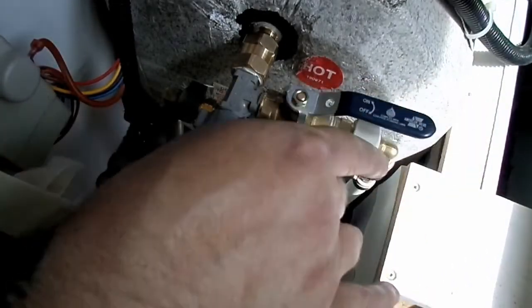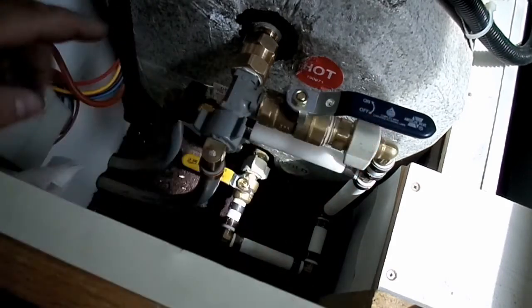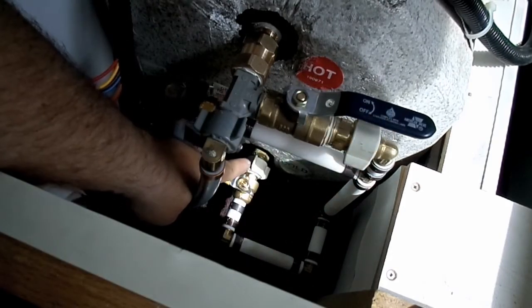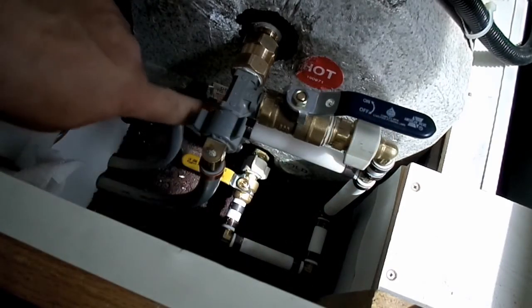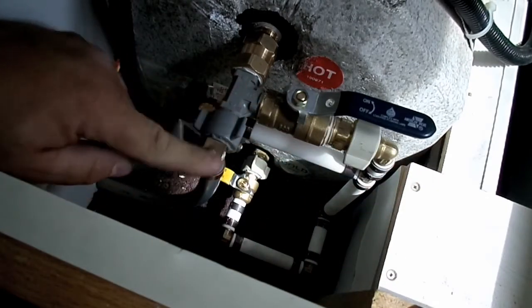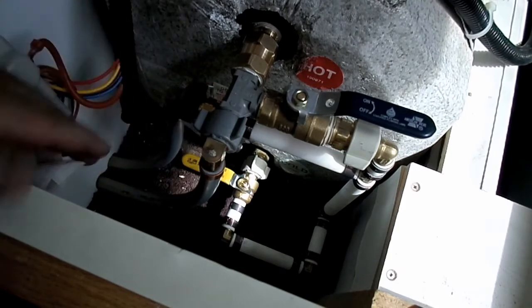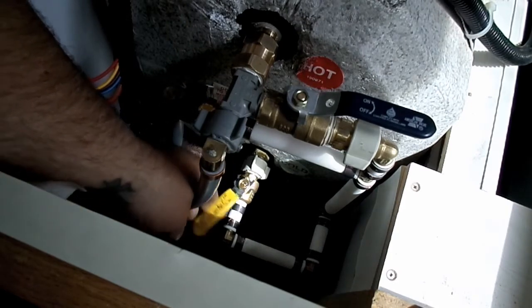That way no water can go into the tank, but the water comes through the main and can come through and go back through the coach here. And then when you're using the water heater, you flip this one back into the on position, allowing water to go into the tank, and you turn this one off.